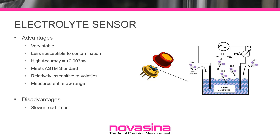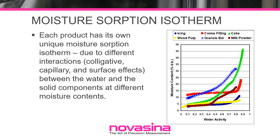Changes in equilibrium relative humidity are tracked by changes in the electrical resistance of the electrolyte sensor. The advantage of this approach is that it is very stable and resistant to inaccurate readings due to contamination, a particular weakness of the chilled mirror sensor. The resistive electrolytic sensor can achieve the highest level of accuracy and precision with no maintenance and infrequent calibration.